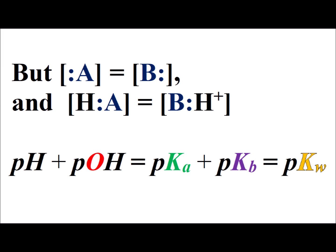the logarithmic terms from the previous slide cancel out, they sum up to zero, so we get our final result that the pH plus the pOH is equal to the pKa plus the pKb, which is equal to the pKw, where Kw is the ion dissociation constant for water.